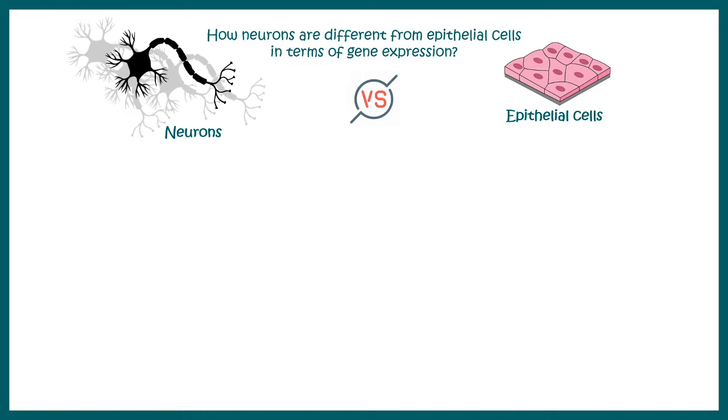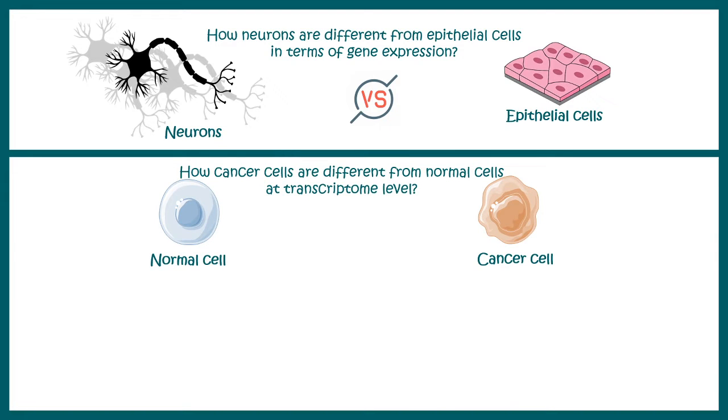In order to understand microarray, we first take some examples and then we would go to step-by-step analysis. Let's say we ask a question: how neurons are different from epithelial cells in terms of gene expression? Or how a normal cell differs from a cancer cell when it comes to transcriptome level.